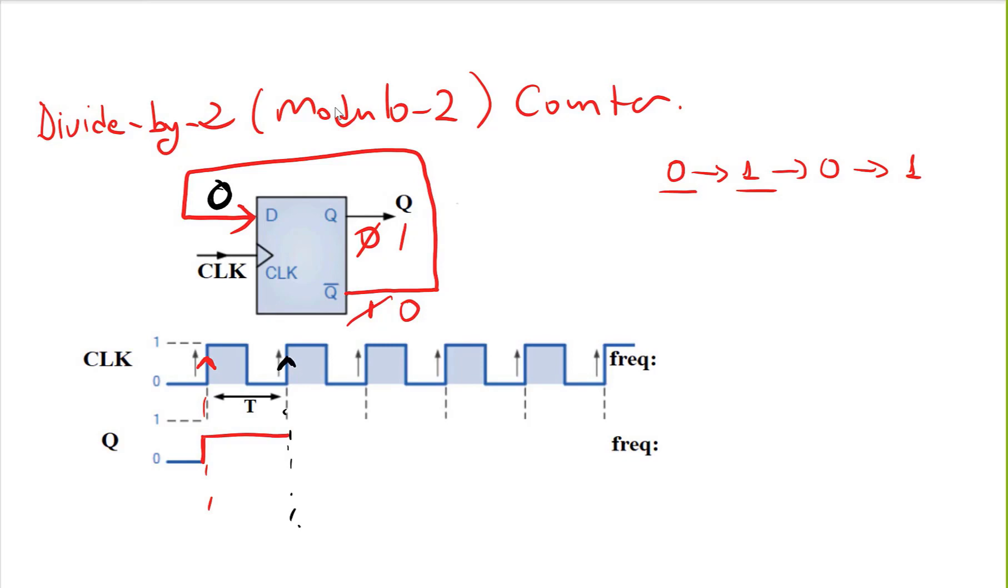Now I will be getting a 0 at the D input, so on this clock edge I have a 0 at the D input and this 0 will be copied to Q. So now I will have a 0 here and a 1 here. On the next edge, I have a 1 here and this one will go to my Q, so I will have 1 here and 0 here, and this will continue like this.